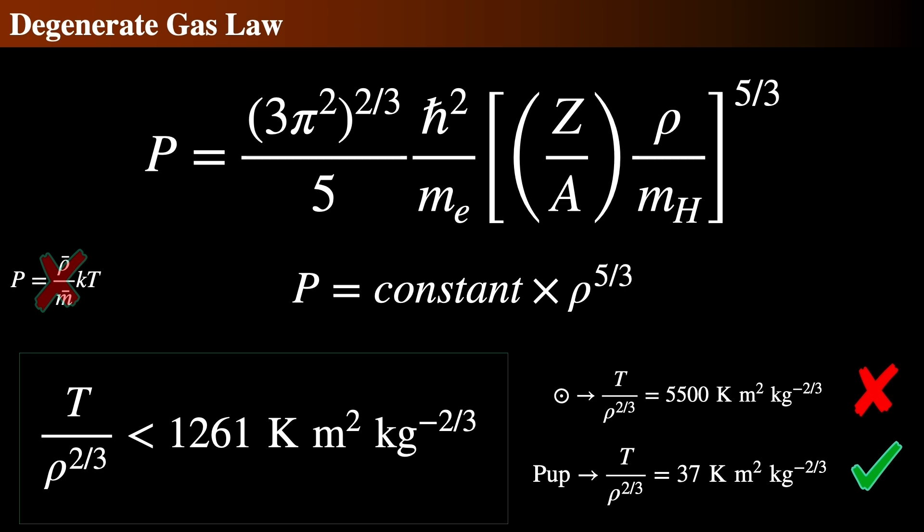The inequality across the bottom shows the crossover point between a normal gas and significant degeneracy. Here, T is the star's core temperature, and rho is the core's density. If this ratio is less than that number, then it's mostly degenerate. Currently in the sun, the sun's core is not degenerate since that ratio is about 5,500, but something like the pup, the white dwarf orbiting Sirius, is. Its value is extremely below the boundary, so it's fully degenerate.